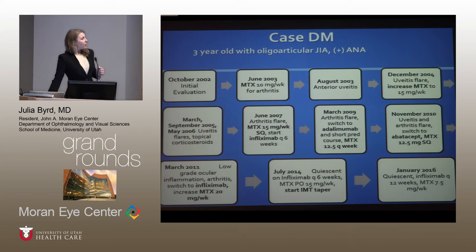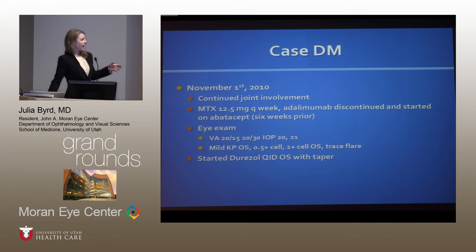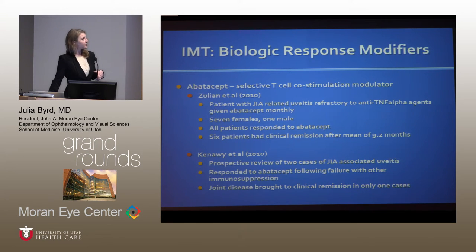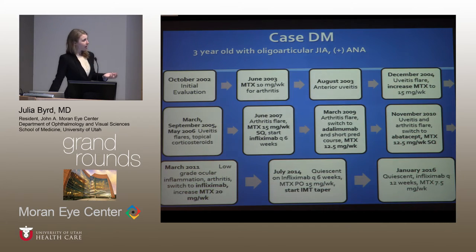In November of 2010, the patient had both a uveitis and an arthritis flare. He was switched to abatacept — still on methotrexate 12.5 milligrams — having actually been switched to abatacept six weeks prior to this visit for his joint involvement. On exam he still had inflammation, more so in the left eye, which had chronically been the case, and he was started again on topical corticosteroids. Abatacept is a selective T-cell co-stimulation modulator; small series showed some clinical remission of uveitis — eight patients in one series, two reported cases in another — but in our patient it was not effective in controlling his ocular inflammation.